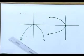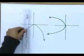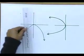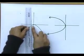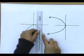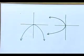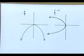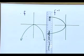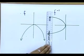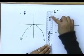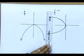Now look — is f a function? Yes it is, because the vertical line only cuts the graph at one place, one place, one place. Is f inverse a function? No, ma'am. It is not a function, because the x values are the same for two different y values.